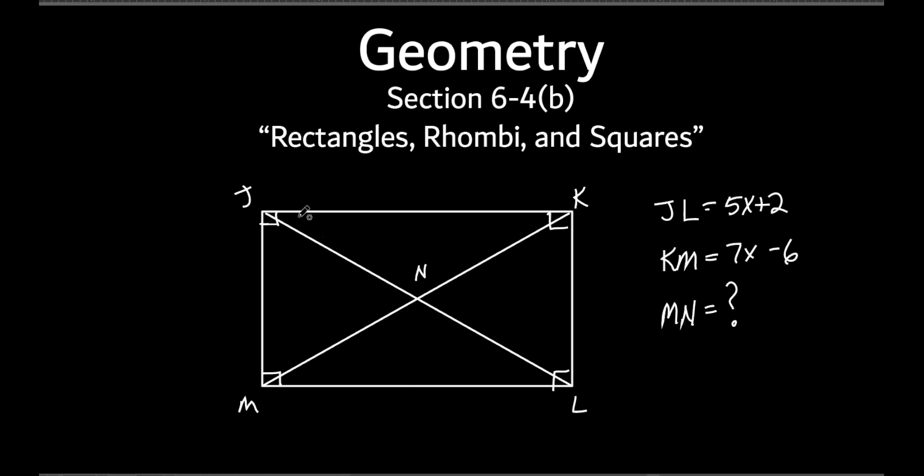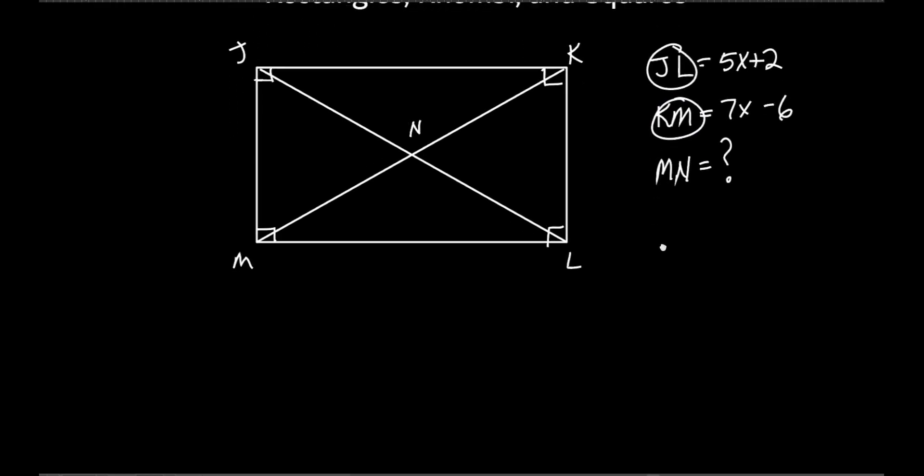So JL, that's this whole thing right here, is 5x+2. KM, where's K? That one right there is 7x-6. Well, what did I just say about the diagonals of a rectangle? What are they? They're equal to each other. What is JL? JL is a diagonal of the rectangle, isn't it? And what is KM? It's another diagonal. And what's true about the diagonals? They are equal to each other. So what are we going to do with those two things? Set them equal to each other.